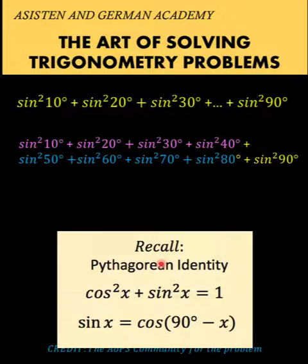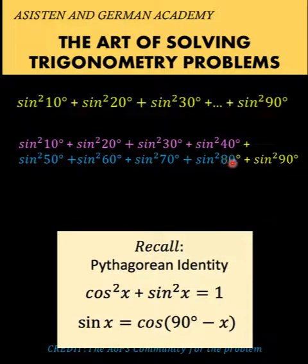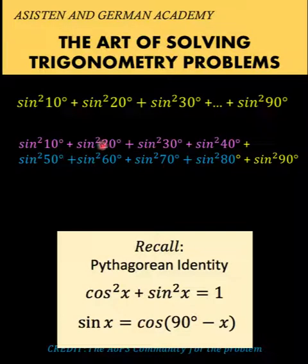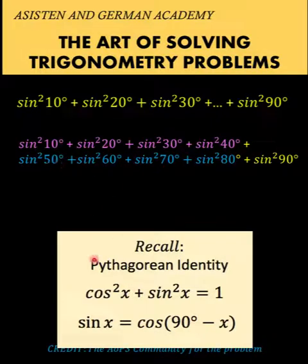Notice that 10 degrees and 80 degrees are complementary angles, 20 degrees and 70 degrees are complementary angles, the same with 30 and 60, and 40 and 50. So these pairs fit the second identity. In order to have cosine squared x plus sine squared x, we can transform each of the pink terms into the corresponding cosine function.